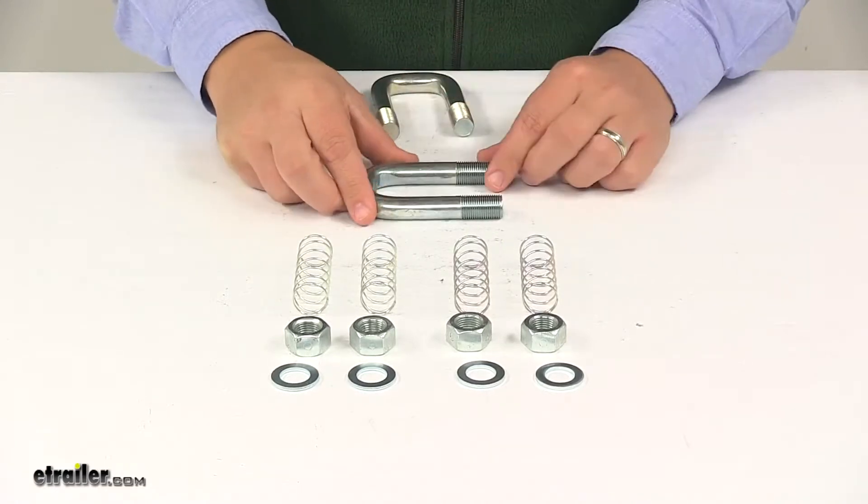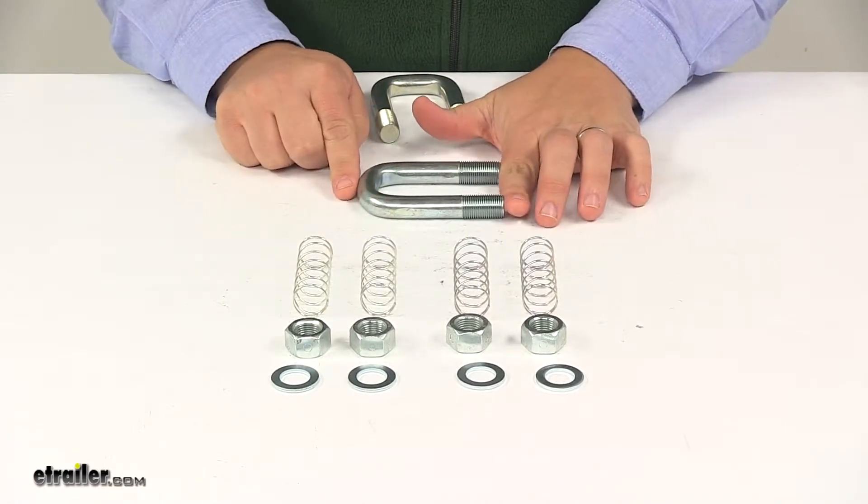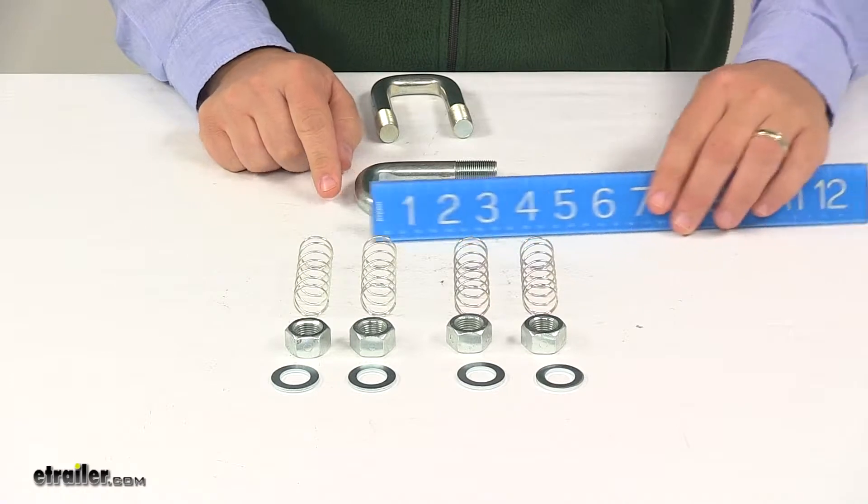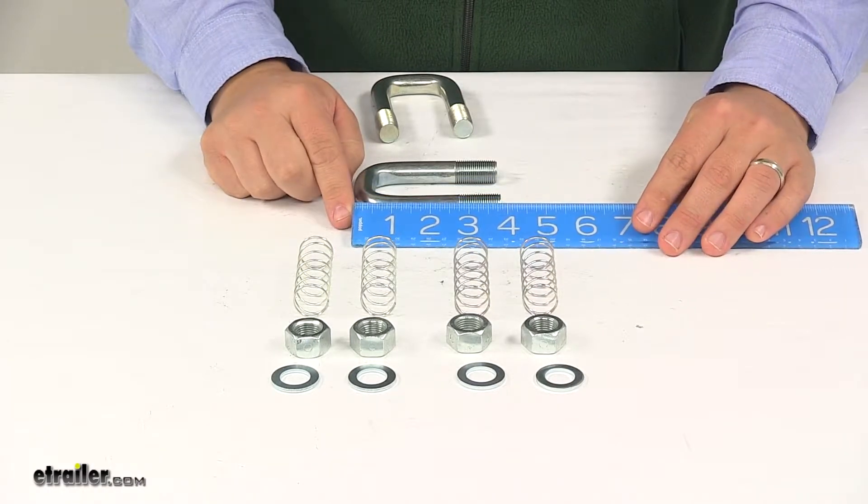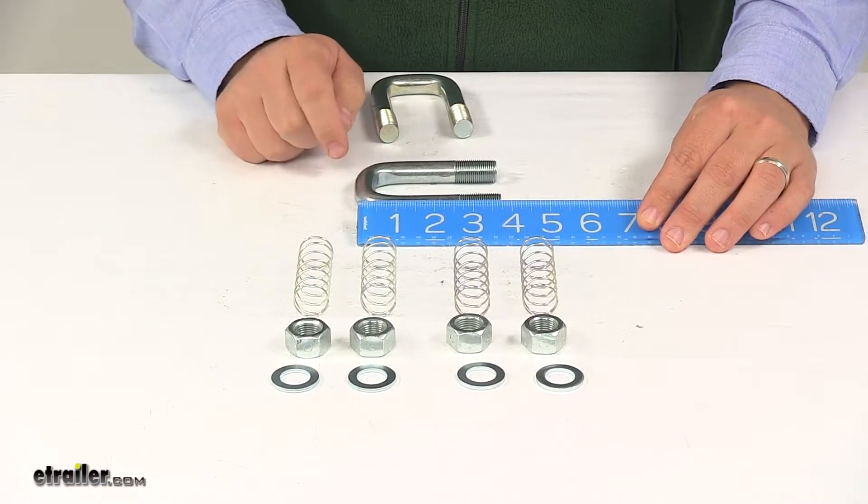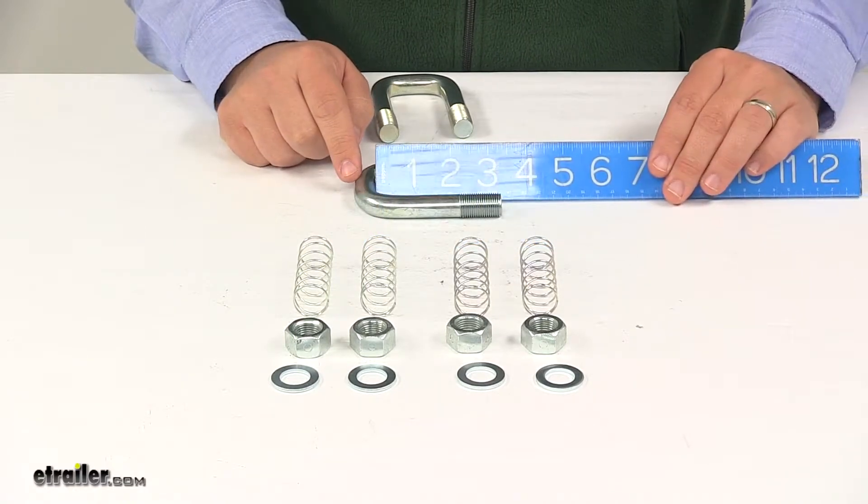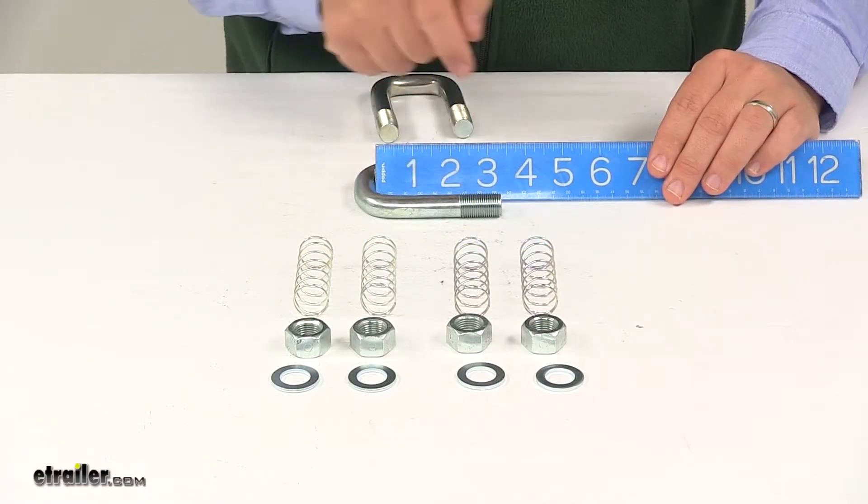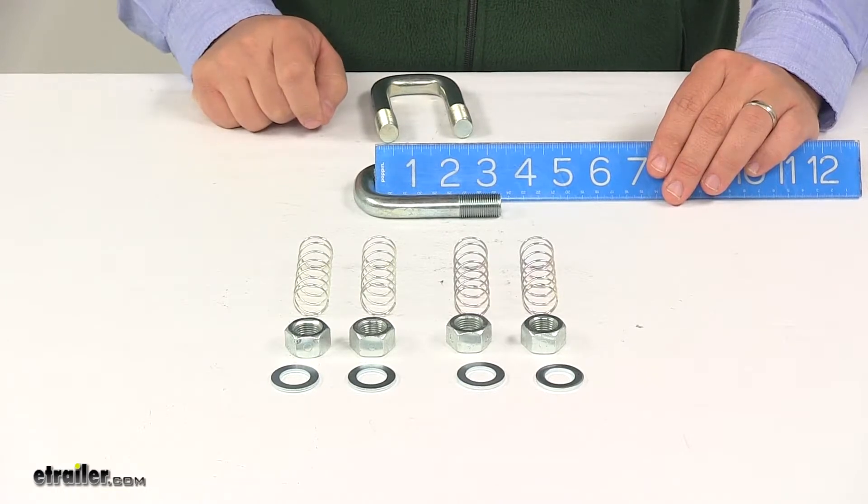Overall measurement here on the U-bolt from the bottom of the threaded portion to the very top, that measures about three and three-quarter inches. From the bottom to the bottom of the threads, it's about three and one-quarter.